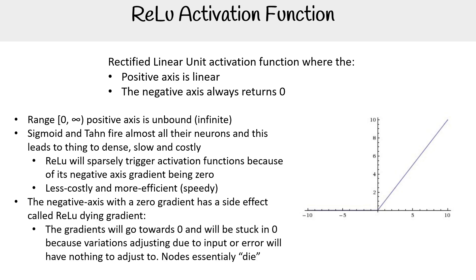The negative axis with a zero gradient has a side effect called the ReLU dying gradient. The gradient will go towards zero and will be stuck at zero because variations adjusting due to input or error will have nothing to adjust to. So the nodes essentially die.